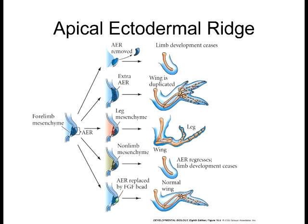The underlying lateral plate mesoderm with FGF-10 induces the ectoderm to start expressing FGF-8, starting limb bud formation, then the AER forms shortly after. In experiments where they took off half the AER, you get the humerus but it doesn't develop beyond that. When extra AER is added, it causes multiple digits to form. Taking leg mesenchyme and placing it where the wing forms results in leg formation there — illustrating that it's the underlying fate of the mesoderm cells that determines forelimb versus hindlimb identity.